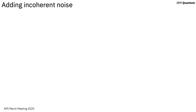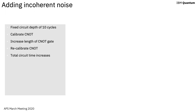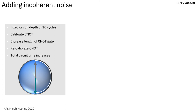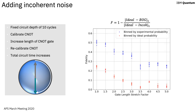To add incoherent noise, I keep the circuit depth fixed to 10 cycles, calibrate my CNOT, and then increase the length of the CNOT gate in time and recalibrate. Nominally I'm still doing a calibrated CNOT, just taking more time, so the effect of decoherence is greater. The amount of incoherent noise increases as expected, as shown by the data binned by experimental probability.